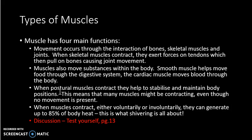The fourth function is heat generation. When muscles contract either voluntarily or involuntarily, they can generate up to 85% of our body heat. This is why when we get really cold we start to shiver — the body contracts muscles even when not needed for movement, in an effort to create additional heat.